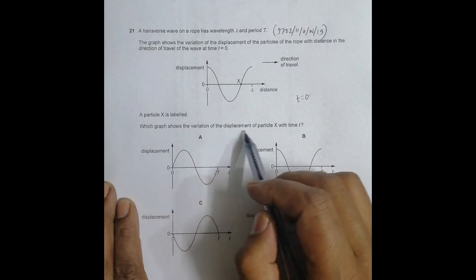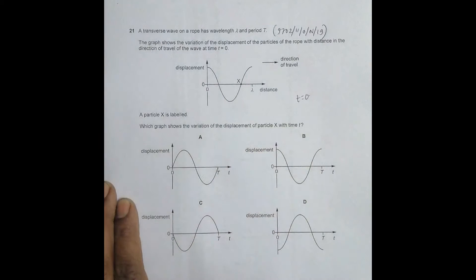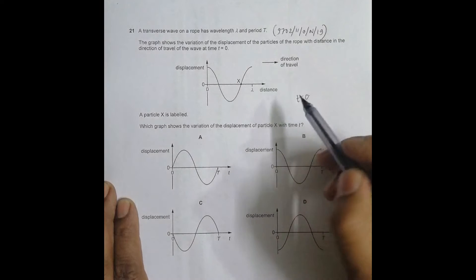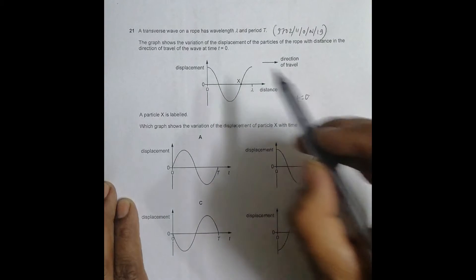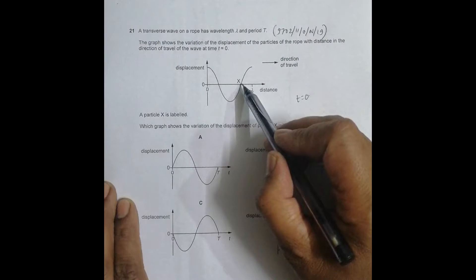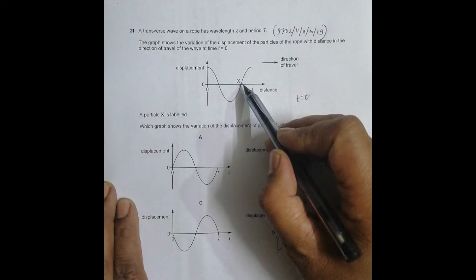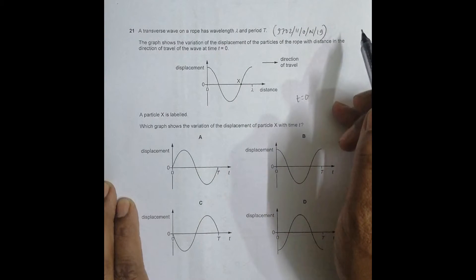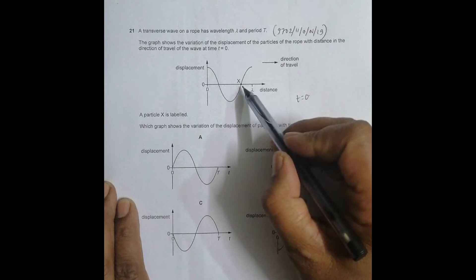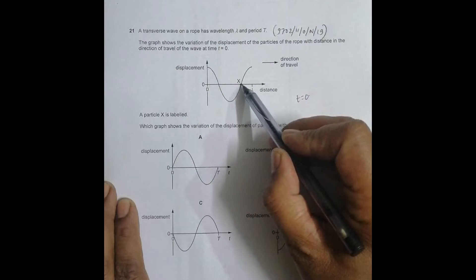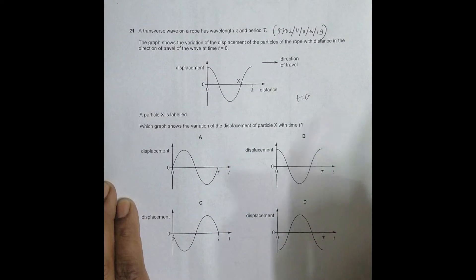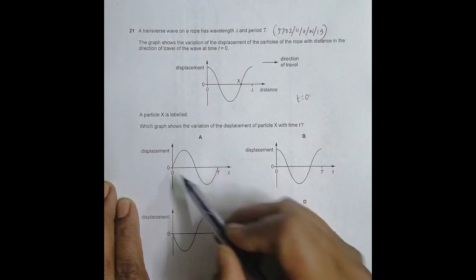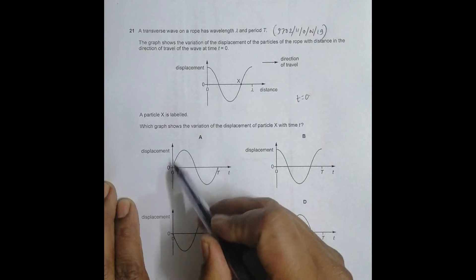The graph shows the variation of the displacement of particle X with time T. So we have to find the displacement-time graph for this particle. At time t equal to zero, the displacement of particle X is zero. So the correct graph must show displacement equal to zero at t equal to zero.